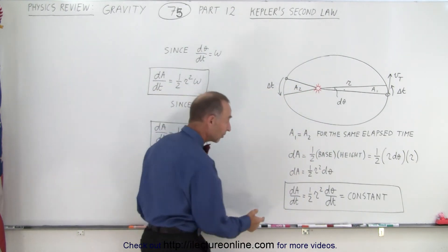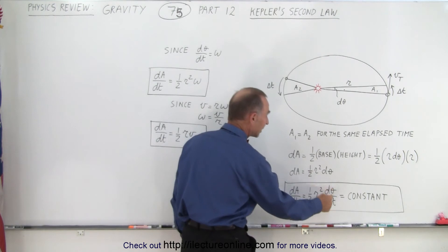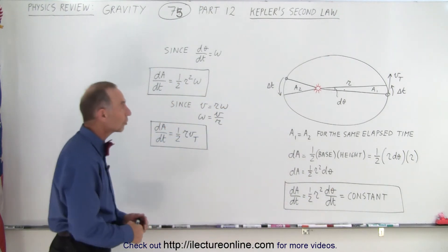Or what we're after was that the change of the area over time, which is therefore one half r squared times dθ dt is equal to a constant. And that is essentially Newton's second law.